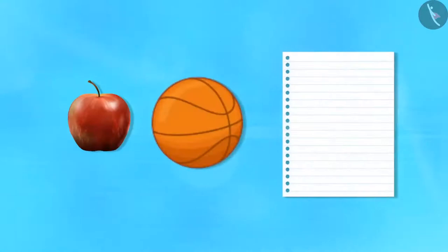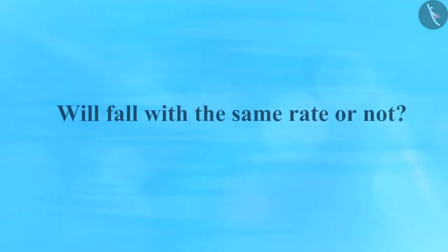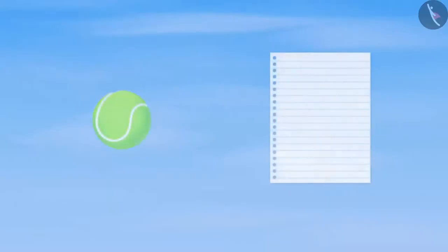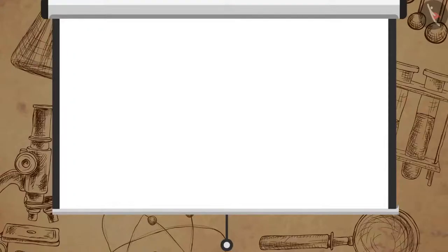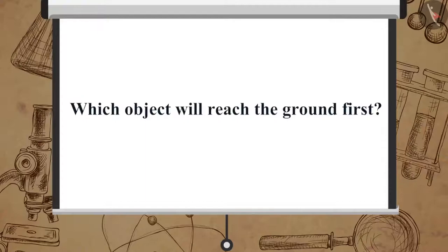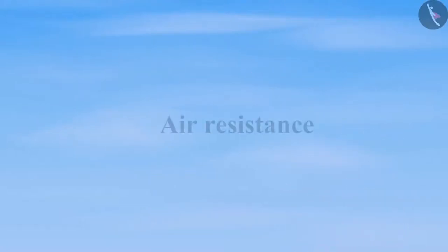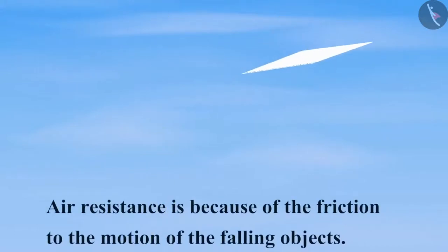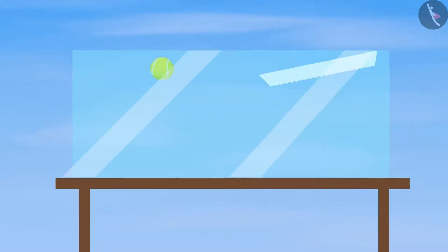Now let us perform one more activity to understand whether all objects — hollow or solid, small or big — when allowed to fall from the same height, will fall with the same rate or not. Take a sheet of paper and a small ball, and drop both at the same time from the first floor of a building. We notice that the ball reaches the ground first. This happens due to air resistance — the air resistance offered to paper is more in comparison to the ball. However, if we perform this activity in a glass box from which all the air has been sucked out, the paper and the ball will fall at the same rate.